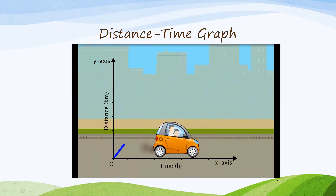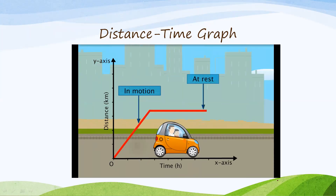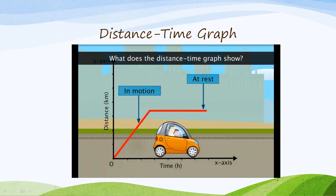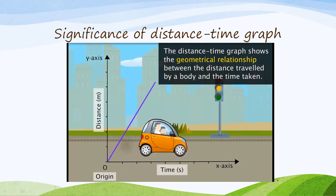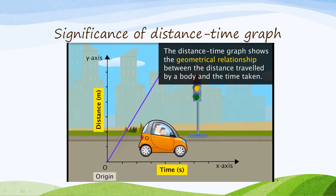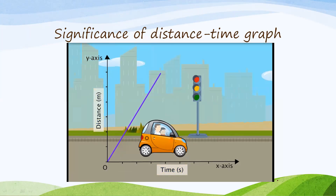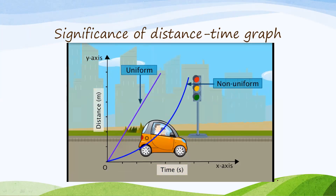For example, if an object is moving, you can draw a straight line which is making an angle with the x-axis. Or if the object is at rest, you can draw another straight line which is parallel to the time axis. The significance of the distance time graph is the geometrical relationship between distance traveled by a body within a given time. For drawing a distance time graph, we mark time along the x-axis and distance along the y-axis. Uniform motion is represented by a straight line making an angle, rest is represented by a line parallel to the time axis, and non-uniform motion is represented by a curved path.